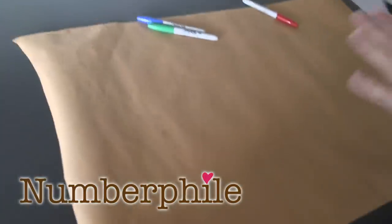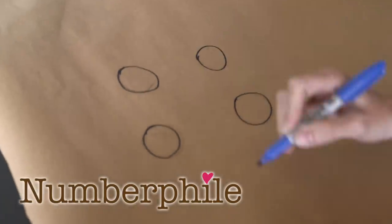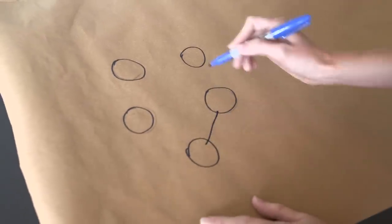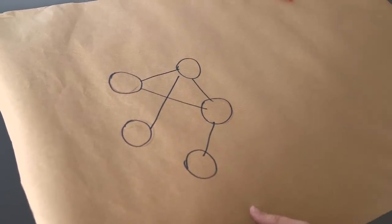So the first thing we're going to do is we're going to draw some graph. I don't care what it looks like. Let's try it. Put a few vertices here and some edges. Connect it up nicely. Okay, so there's a graph.